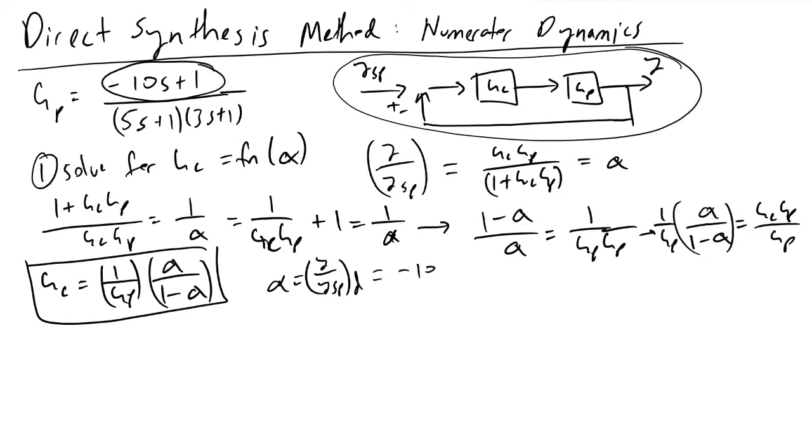We're going to let the numerator of alpha be equivalent to the numerator dynamics in our process transfer function, minus 10s plus 1. In the denominator of alpha, because we need this to be a proper system—the degree of the denominator must be greater than the degree of the numerator—instead of lambda*s plus 1 like we had before, we now need to square this quantity.